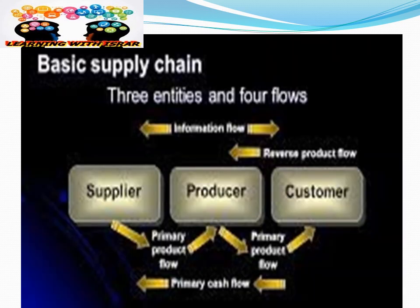You can see this picture which tells you the basic supply chain. They have three identities and four flows. The three identities are suppliers, producers, and customers. The flows are product flow, information flow, cash flow, and reverse flow. These are the four flows in a supply chain and three basic players — suppliers, producers, and customers — who exchange, receive, or send products, cash, information, and returns.